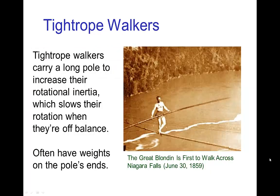In fact, tightrope walkers take advantage of this effect where they carry a long pole. The long pole has a large rotational inertia and that slows their tipping motion. They can also put weights on the ends of the pole to slow them as well.